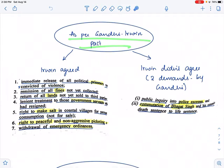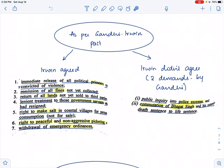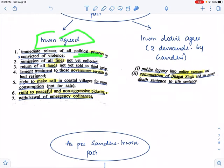As per this Gandhi-Irwin pact, Irwin agreed to certain things and Irwin did not agree to certain demands that were put forward by Gandhi. Irwin agreed that he would release all those political prisoners who were not convicted of violence. He also said that all the fines that were not yet collected would be remitted. He said that the land would be returned if the land was not sold to the third party, and he said that all those government servants who have resigned on the orders of Gandhi would be subjected to lenient treatment. They would not be tortured.